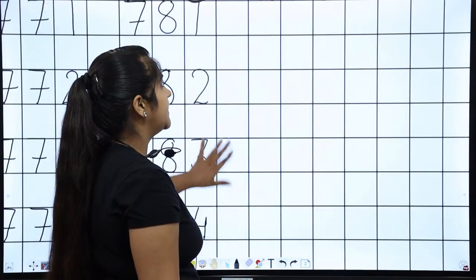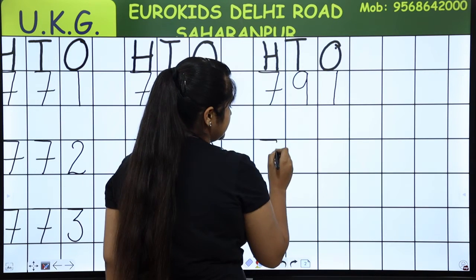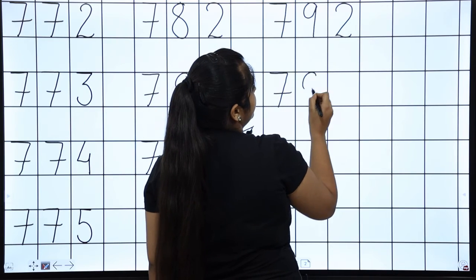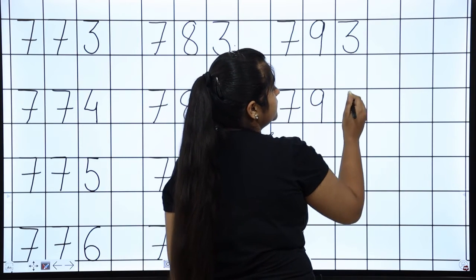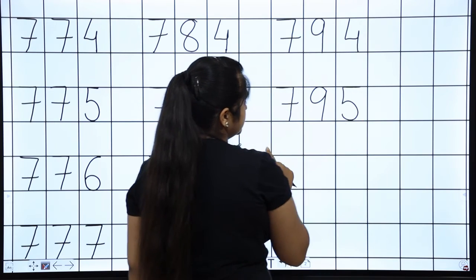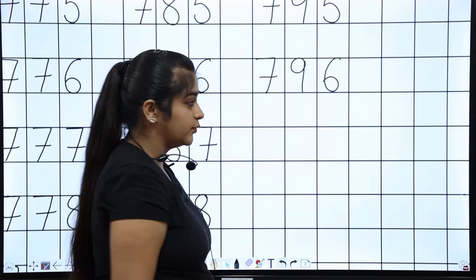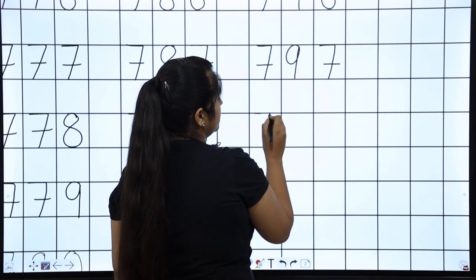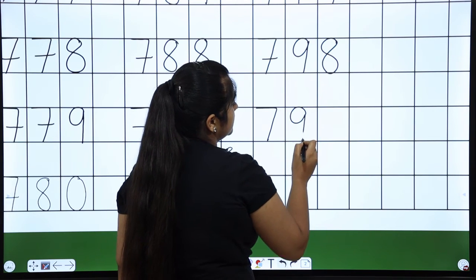Now, we are going to start with the last line from seven hundred ninety-one. Seven hundred ninety-one, seven hundred ninety-two, seven hundred ninety-three, seven hundred ninety-four, seven hundred ninety-five, seven hundred ninety-six, seven hundred ninety-seven, 798, 799.